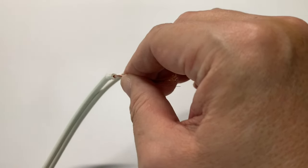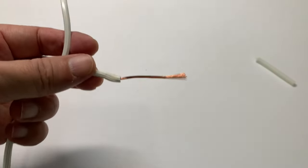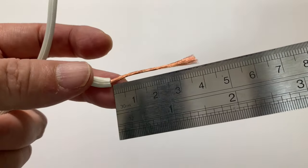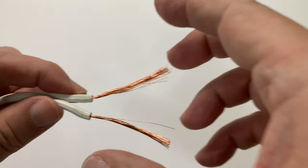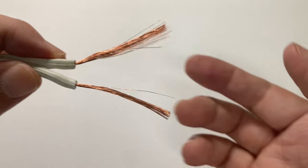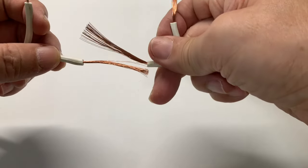Leave the strands loosely but together. Do not twist the strands. Do the same to the other wire, and the same to the other pair of wires you intend to splice them to.